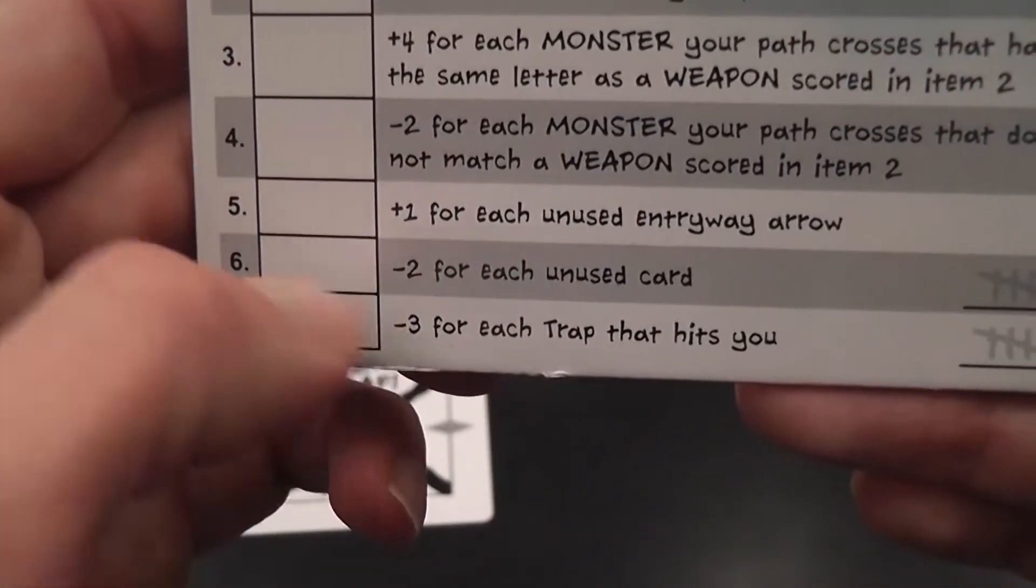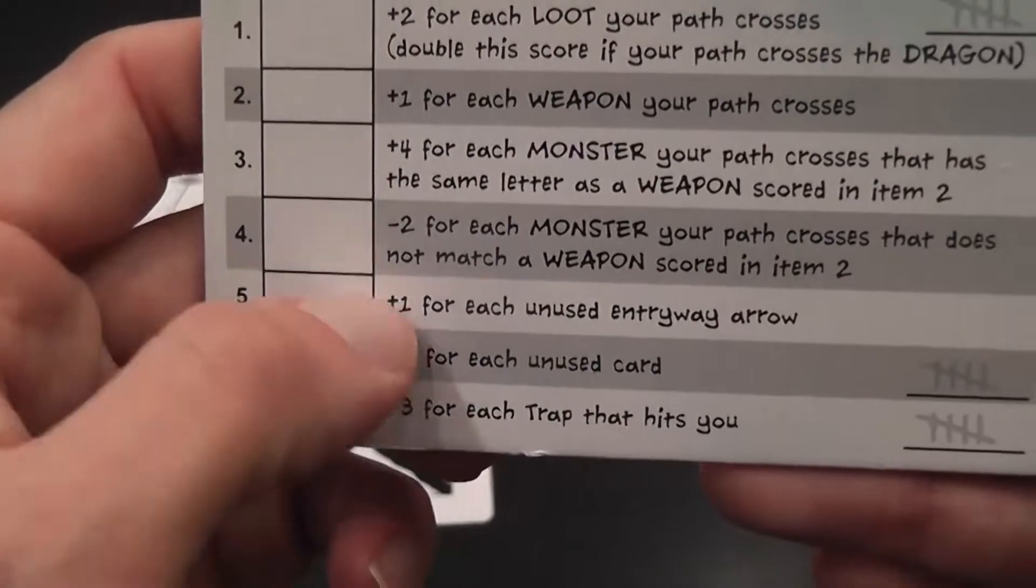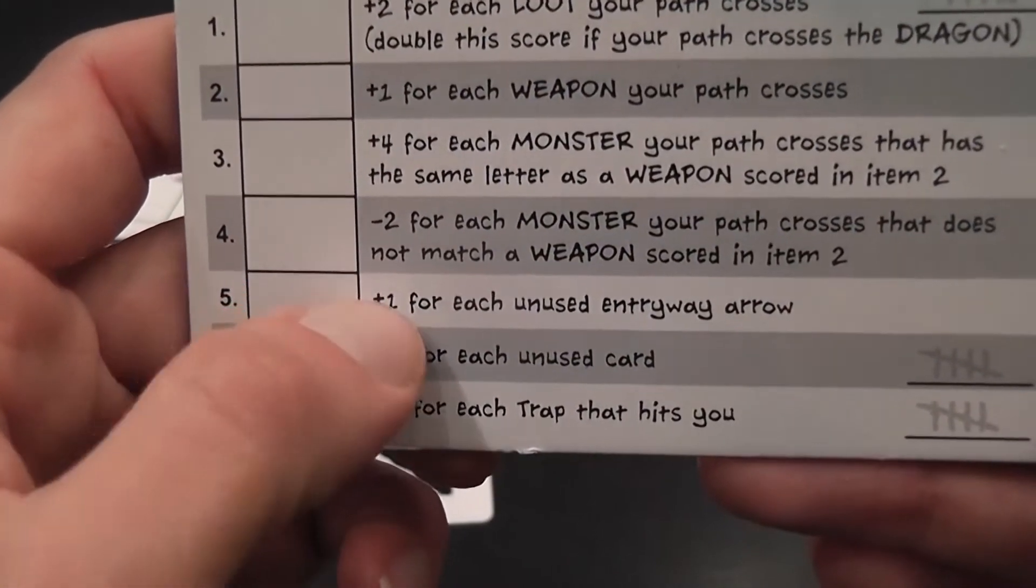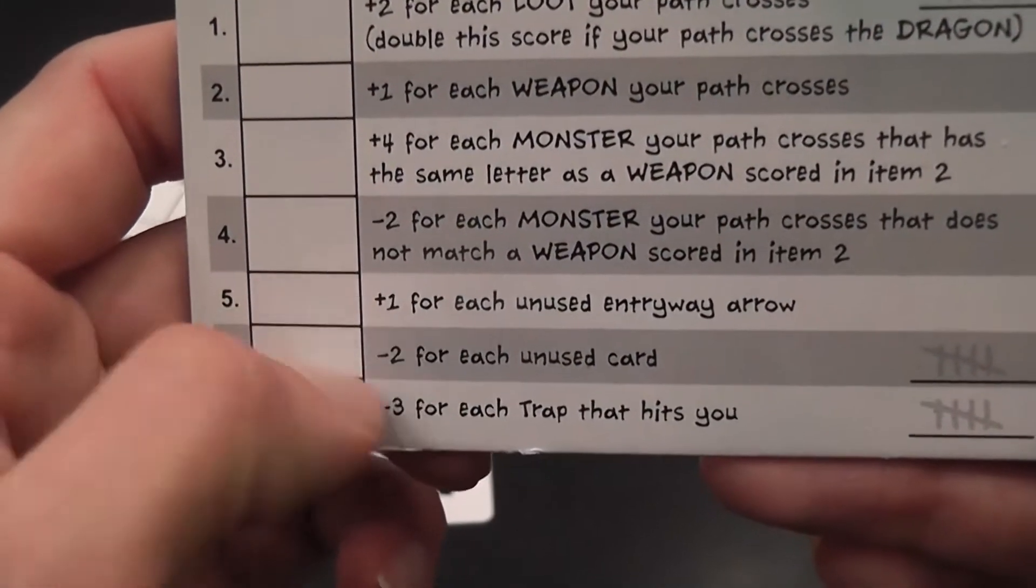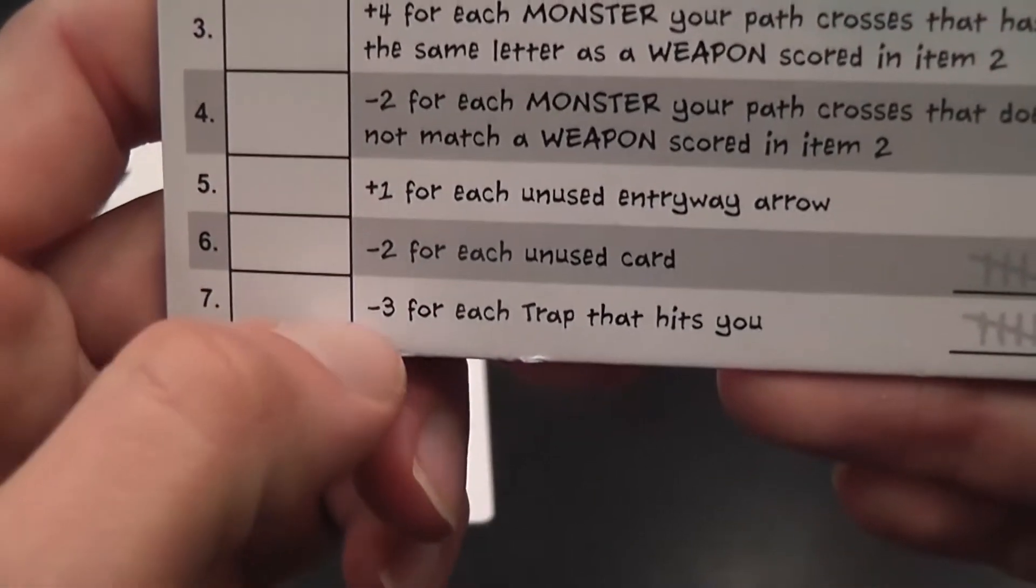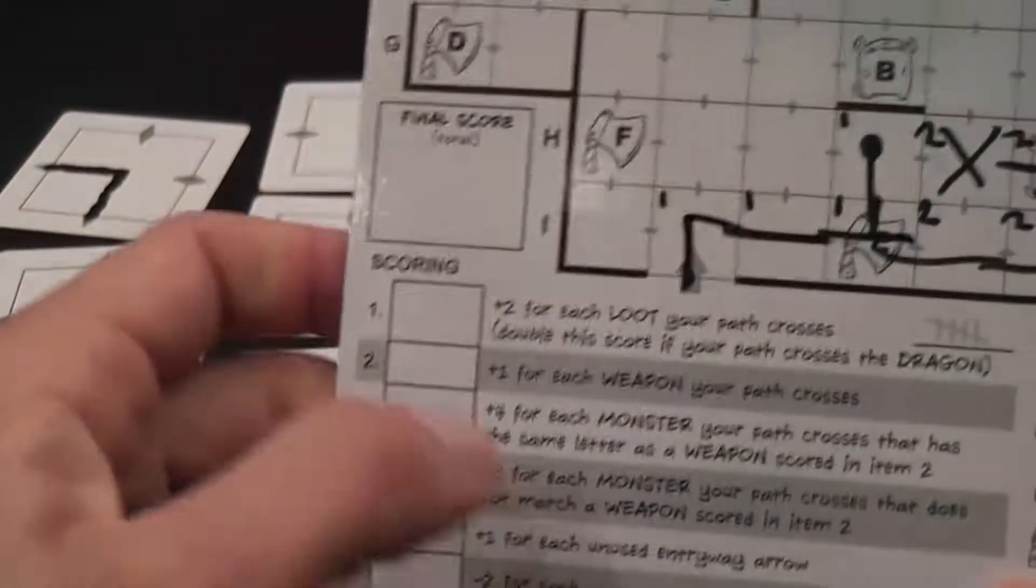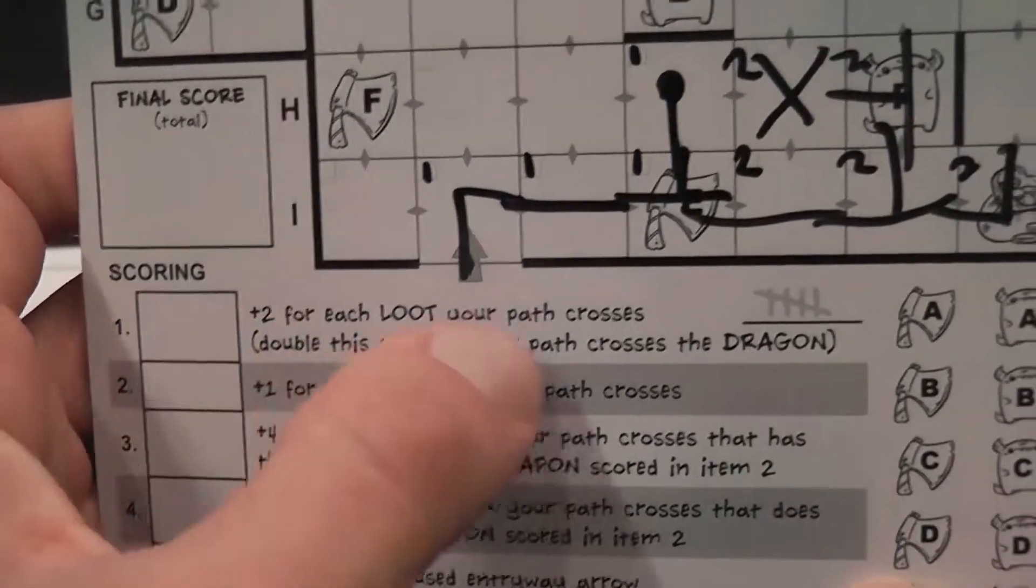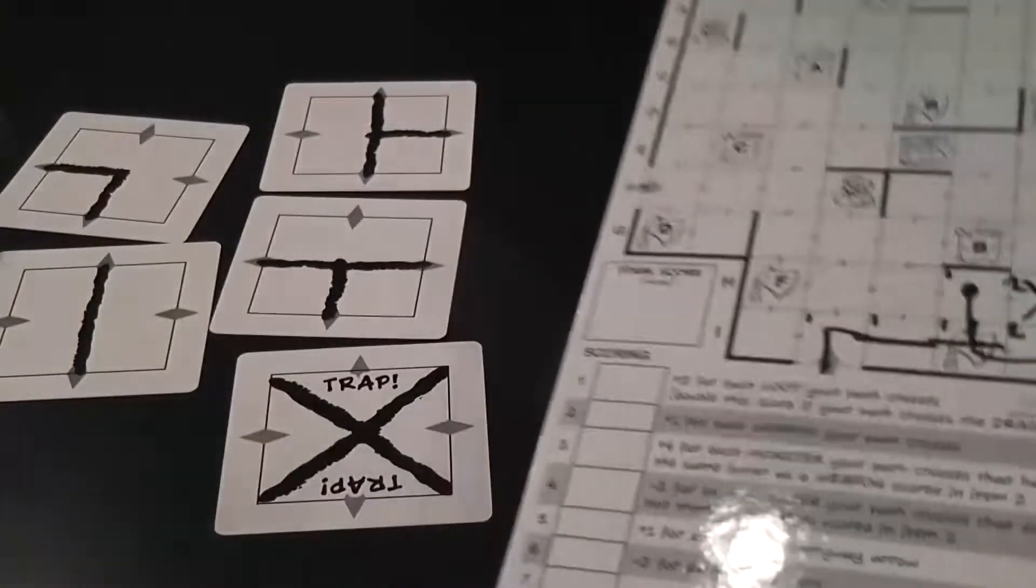I still have to see that happen, because worse come to worse, just use an entryway that you didn't use. The bonus that you lose is better than the penalty that you get. Minus three for each trap that hits you, and I think I mentioned this, you double the score the loot if your path crossed the dragon.